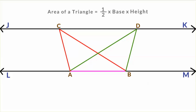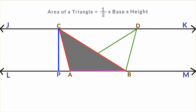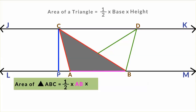Now let us consider triangle ABC. If I take AB as the base, then the area of the triangle will be half into AB into its height. If I take AB as the base of triangle ABC, then the height of triangle ABC will be the line CP, since it is perpendicular to the line LM. So the area of triangle ABC will be given by half into AB, which is the base, into height CP.